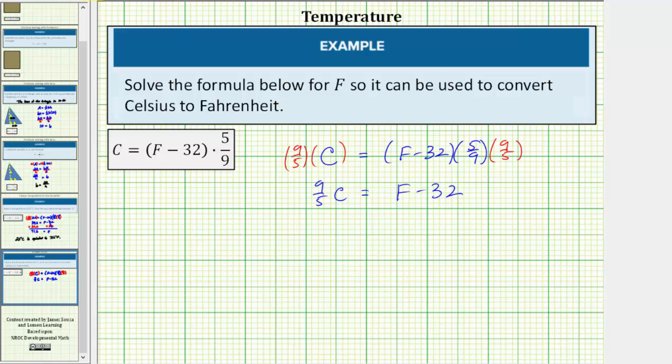Next step to solve for F, we add 32 to both sides. Simplifying, on the right side, minus 32 plus 32 is zero, so we have F equals, these are not like terms because this has a factor of C in it, so we have F equals 9 fifths C plus 32.